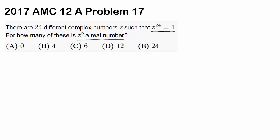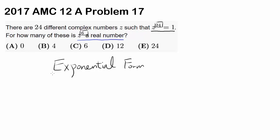In my opinion the easiest way of attacking this is to use the exponential form of complex numbers, because you have this change in exponent from 24 to 6, so it would be easiest if we have Z in exponential form to begin with.